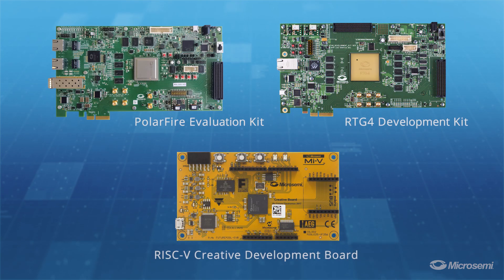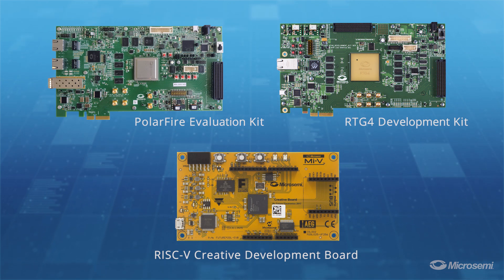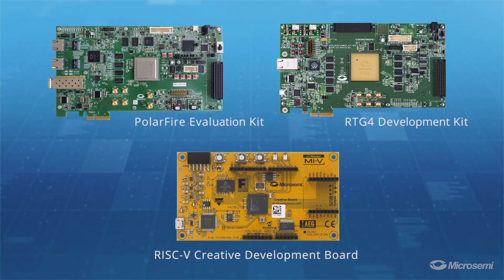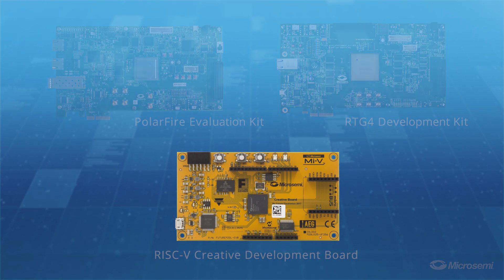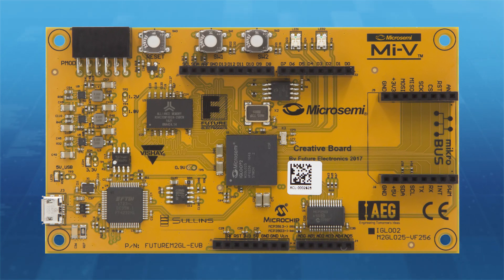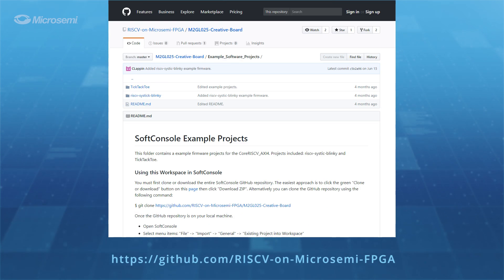Boards. We have numerous evaluation boards which have RISC-V cores running in a design. These boards vary in terms of capabilities, but you can get started with the Future Electronics RISC-V creative board which is only $99.95. This board comes pre-loaded with a RISC-V core running a simple Hello World demo. To see all the available boards, please visit the MicroSemi GitHub site.